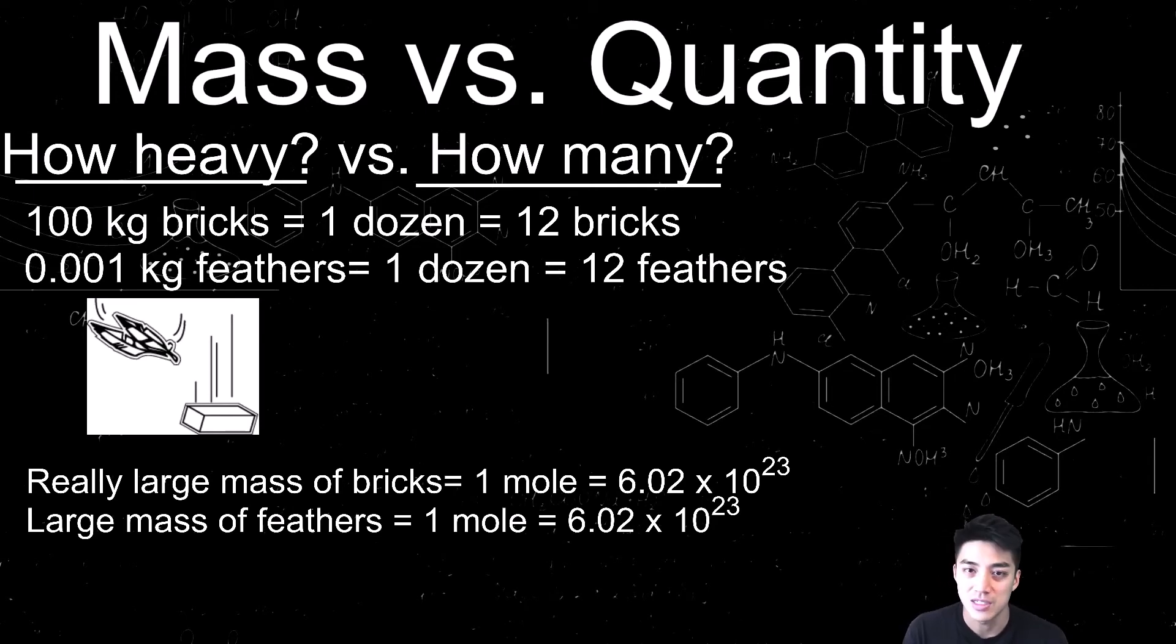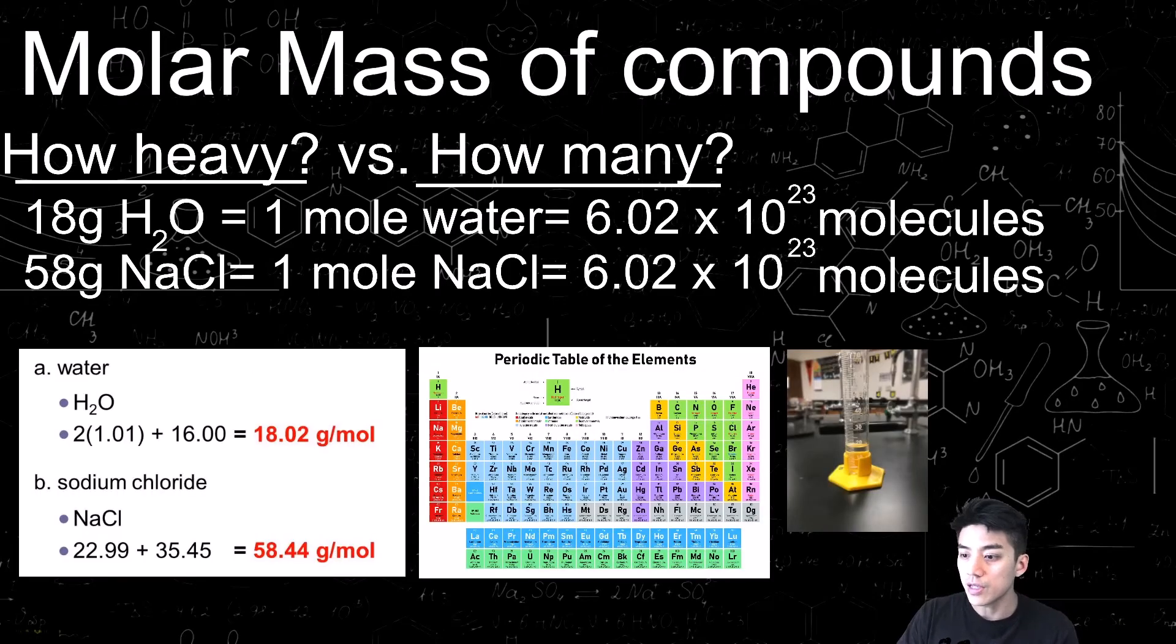If you measure out 18 milliliters of water, remember the density of water is 1, that means you have 18 grams of water. And 18 grams of water is 1 mole of water, which is 6.02 times 10 to the 23rd molecules.